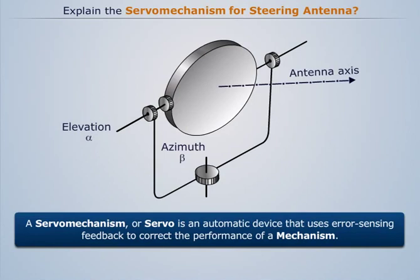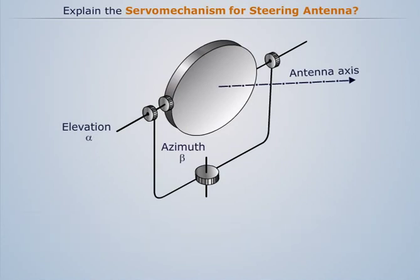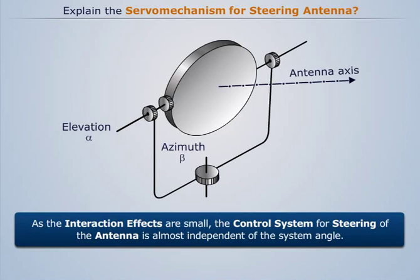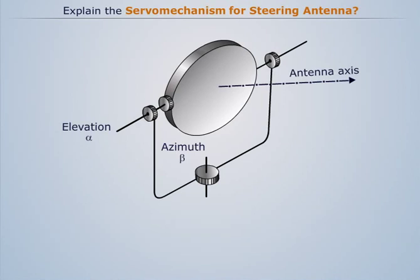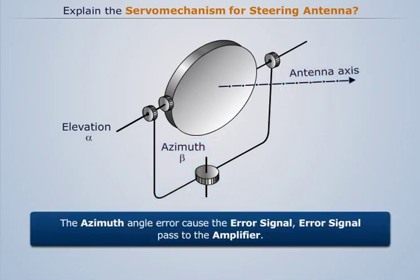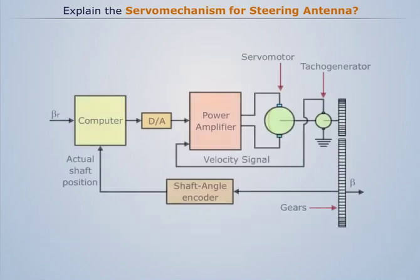As the interaction effects are small, the control system for steering the antenna is almost independent of the system angle. The radar sensor gives the steering command corresponding to the target azimuth angle, and this is compared with the azimuth angle of the antenna axis. The azimuth angle error causes an error signal, which then passes to the amplifier.